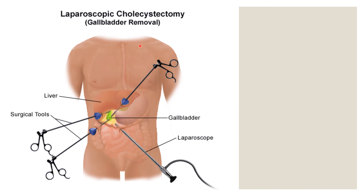In laparoscopic cholecystectomy, you have to be careful when you are removing the gallbladder along with the duct. During that surgery you have to ligate the gallbladder clearly and properly, and separate the cystic duct from it. Then you can remove the gallbladder.